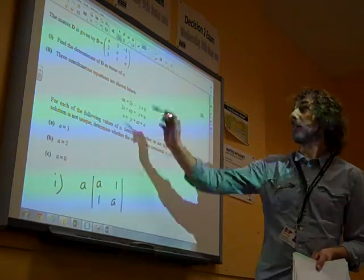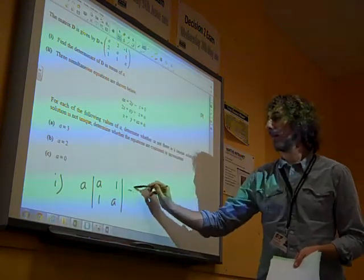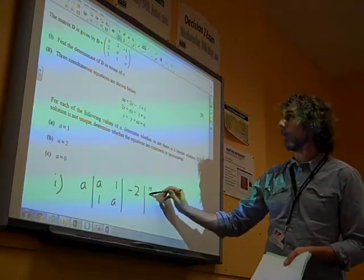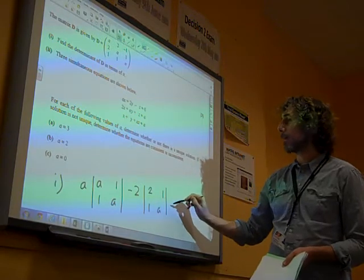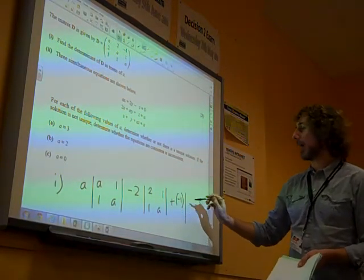It's A times that minor determinant, minus two times the next one, 211A, plus minus one times 2A11.